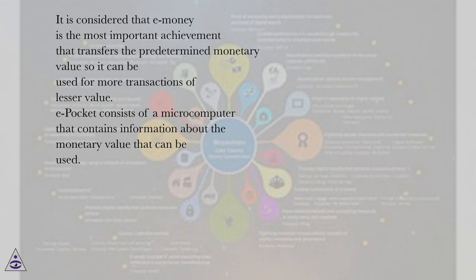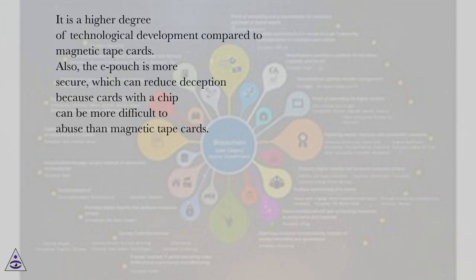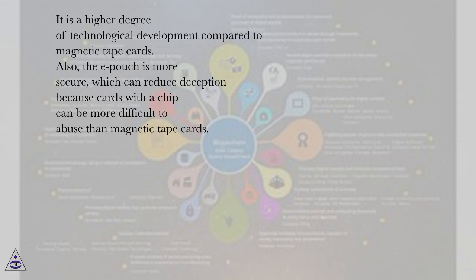An e-pocket consists of a microcomputer that contains information about the monetary value that can be used. It is a higher degree of technological development compared to magnetic tape cards. The e-pocket is also more secure, which can reduce fraud because cards with a chip are more difficult to abuse than magnetic tape cards.